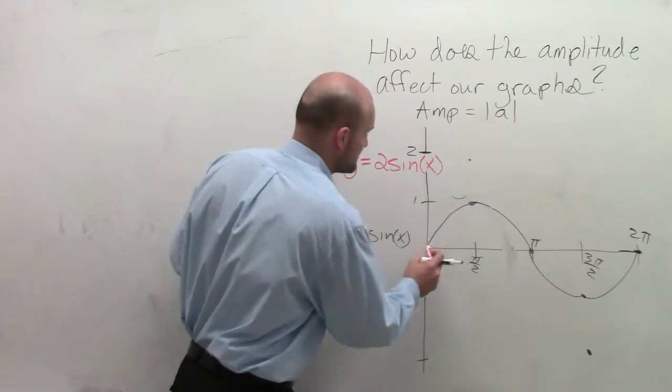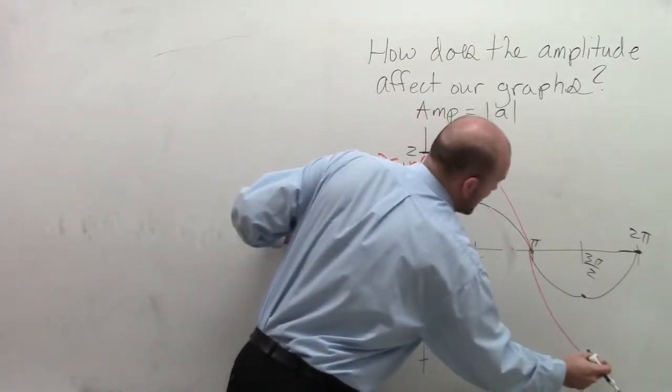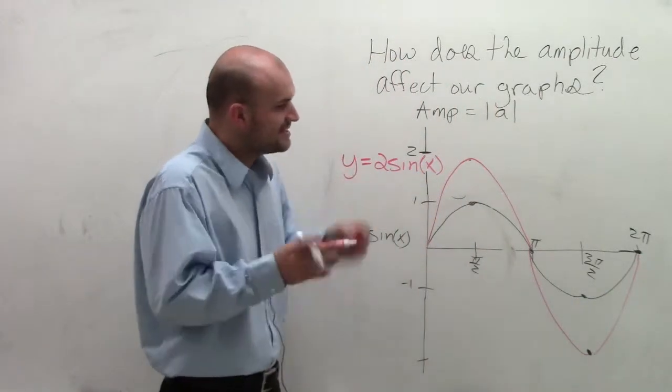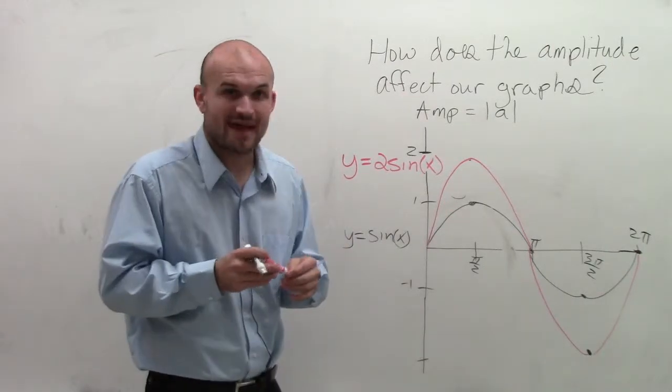But now my graph is going to go up, cross, go down, and then come back up. So you can see how the amplitude has now just enlarged it when your absolute value of a is greater than 1.